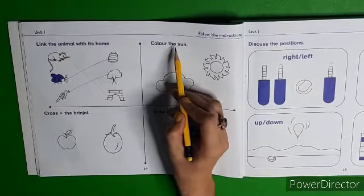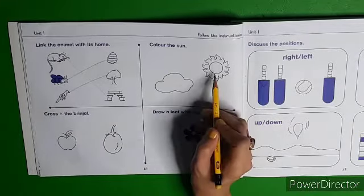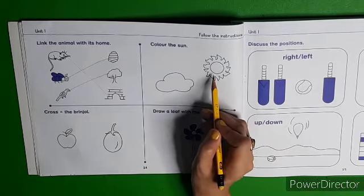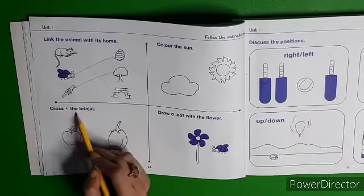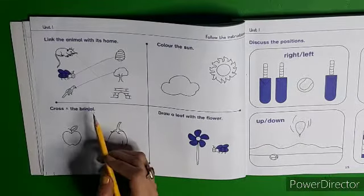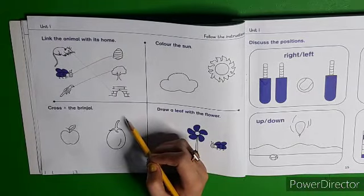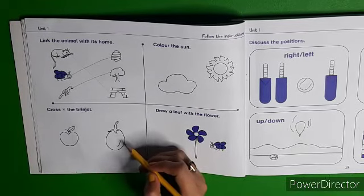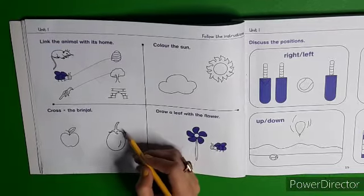Color the sun. Dear children, we have two objects — Cloud and Sun. आपने इस में से Sun — सूरज — में color करना है. Cross the brinjal — Brinjal एक सब्जी है जिसको बैंगन कहते हैं. इसका color purple होता है. Now cross the brinjal.